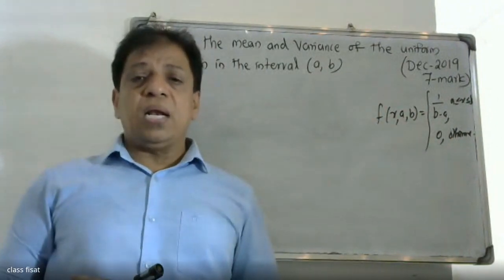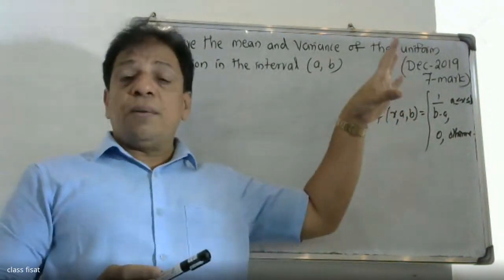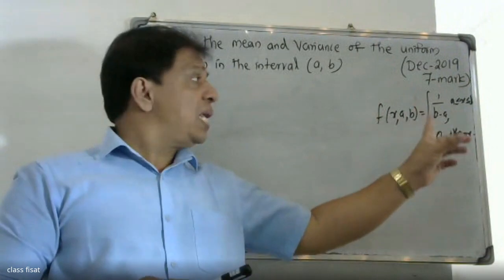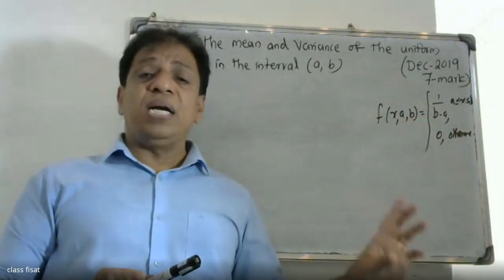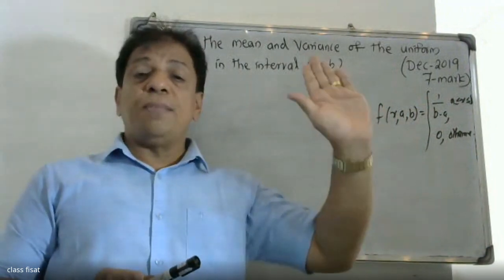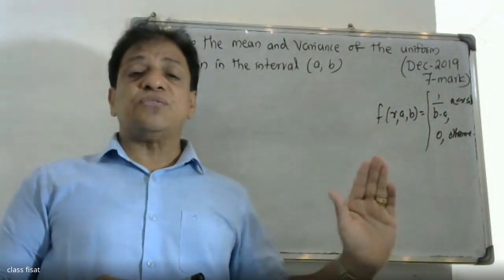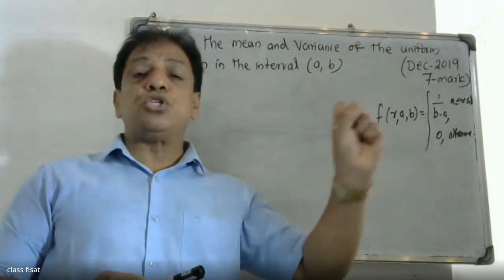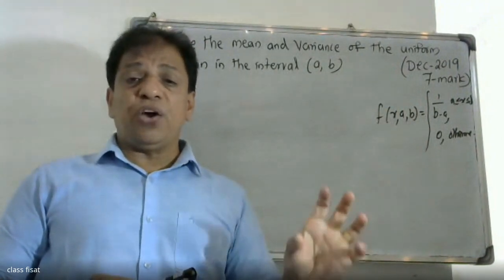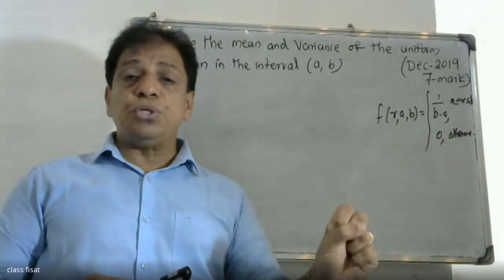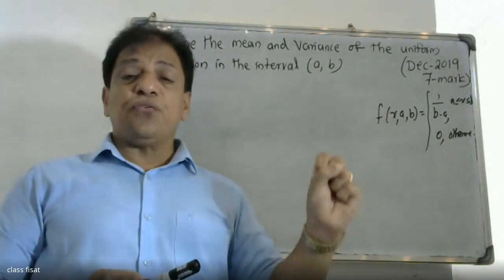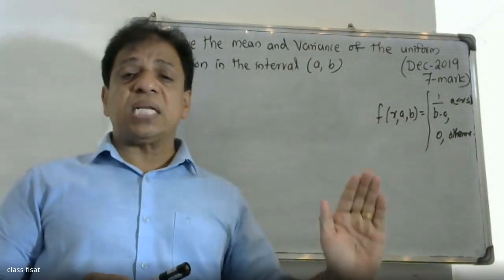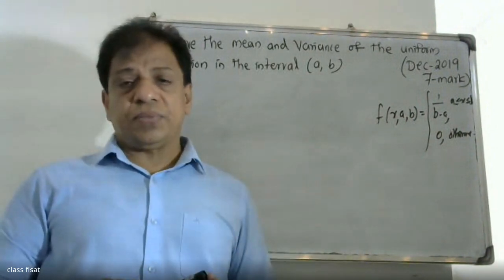So for uniform distribution, f(x; a, b) is equal to 1 by (b minus a) in the interval a ≤ x ≤ b, and the function value is 0 for all other cases. A continuous random variable is said to have uniform distribution on the interval a, b if f(x; a, b) equals 1 by (b minus a) for a ≤ x ≤ b, and 0 otherwise.